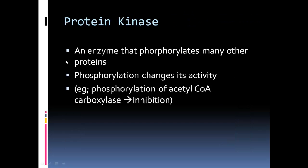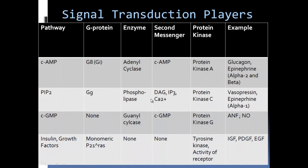Protein kinase is an enzyme that phosphorylates many other proteins — phosphorylation changes its activity. For example, phosphorylation of acetyl-CoA carboxylase will lead to inhibition.